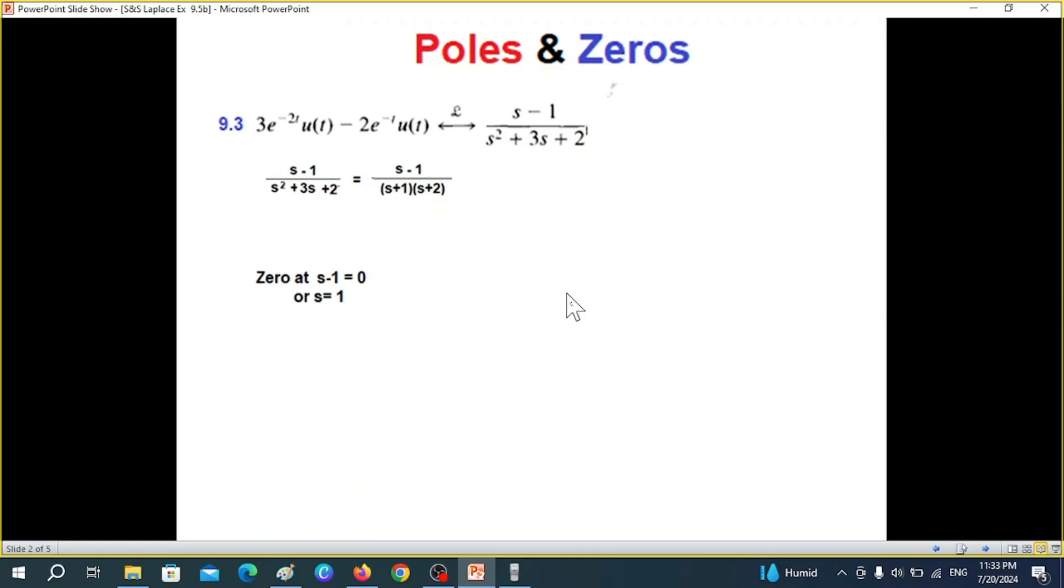And now we can plot. So the top term or the numerator terms when we put equal to zero, this is called the zero value. So at zero s minus one equal to zero, that means s is equal to one. That means at s equal to one we'll have a zero.